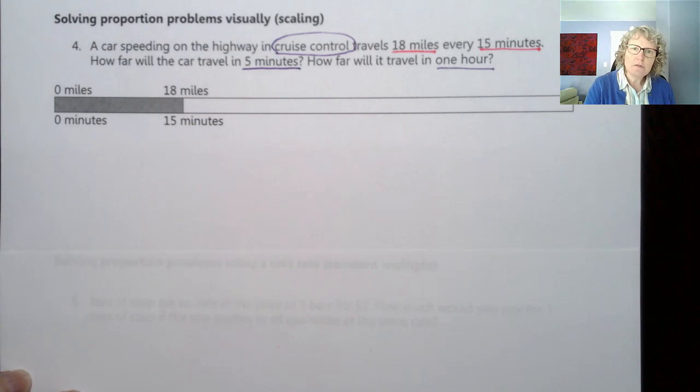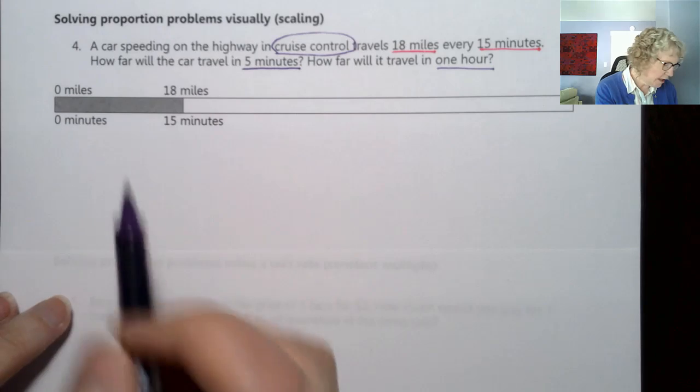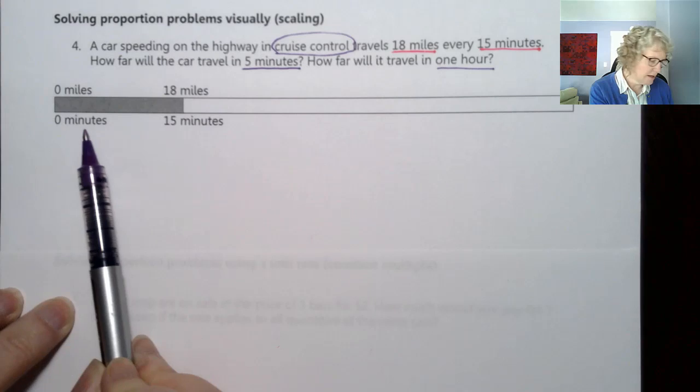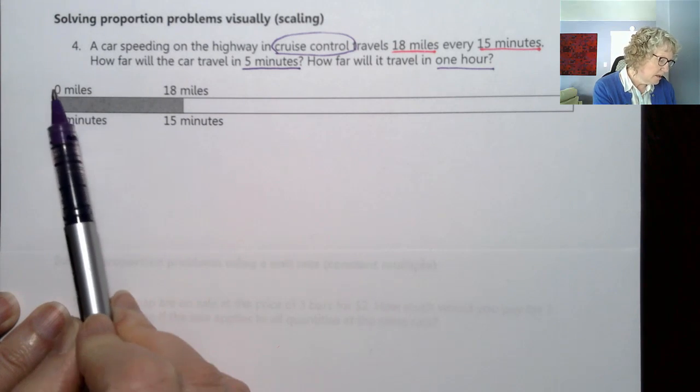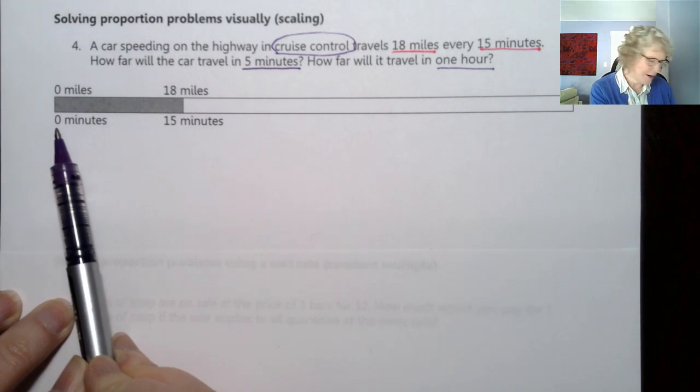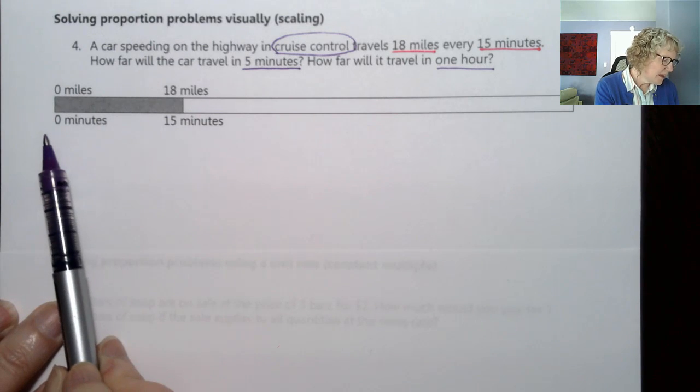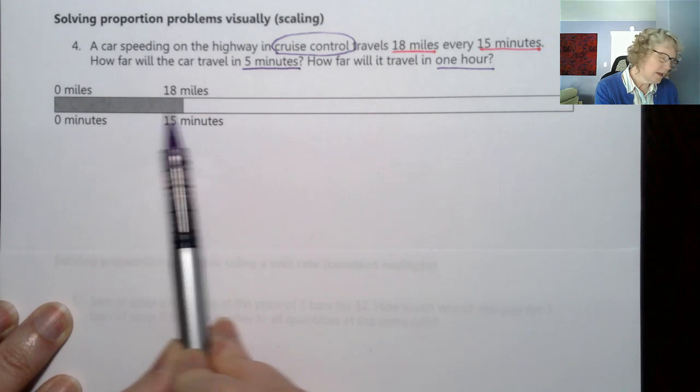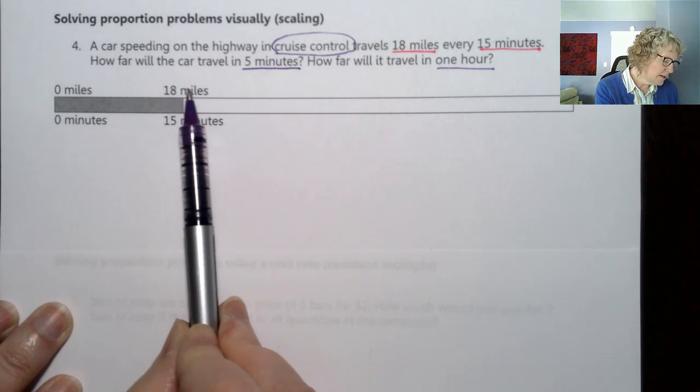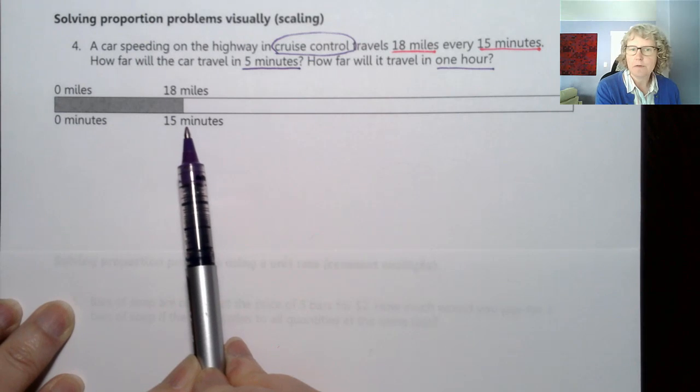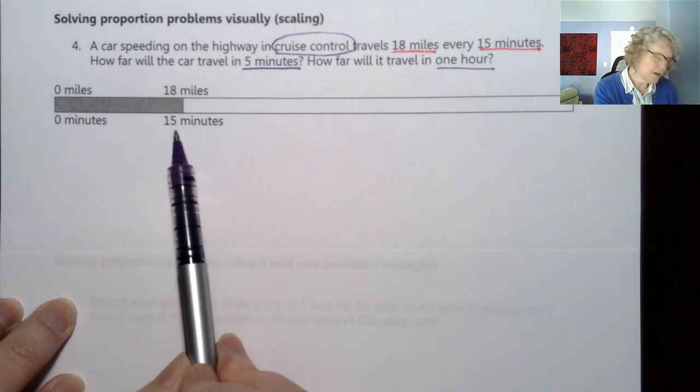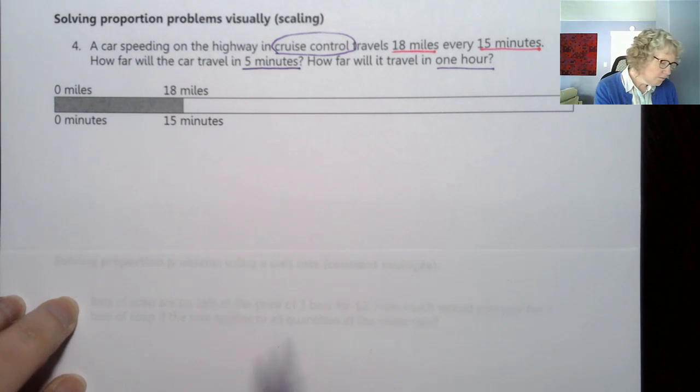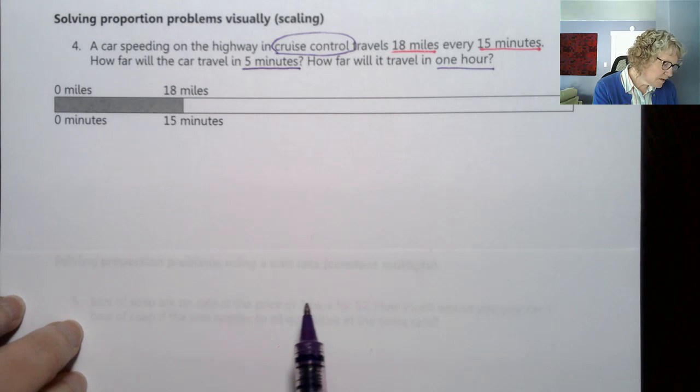We want to know how far it will travel in one hour. To visualize this I have a bar that goes all the way across the page. On the very left side I have zero miles at the top and zero minutes at the bottom because those correspond. Then about a quarter of the way down the bar I have 18 miles on the top over 15 minutes, and I have that part of the rectangle shaded in.